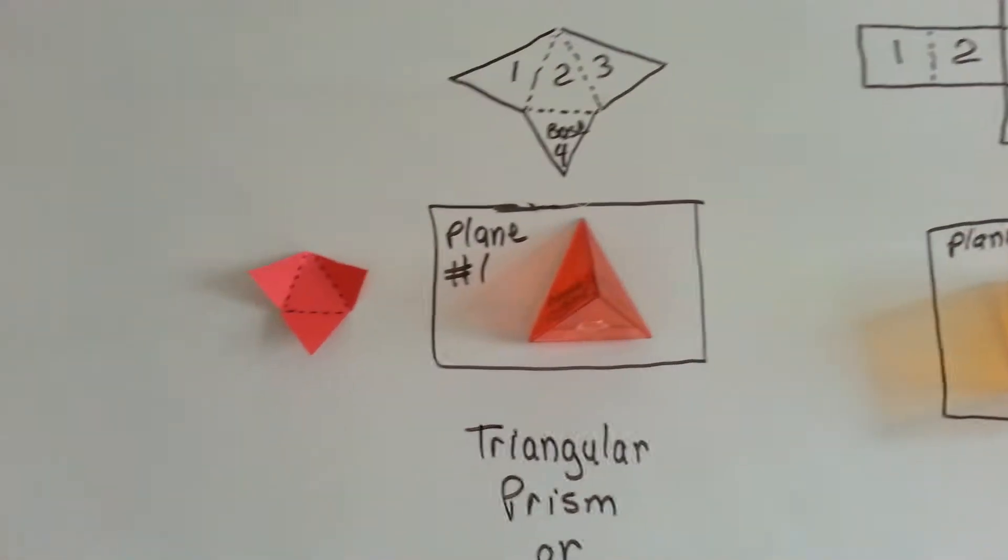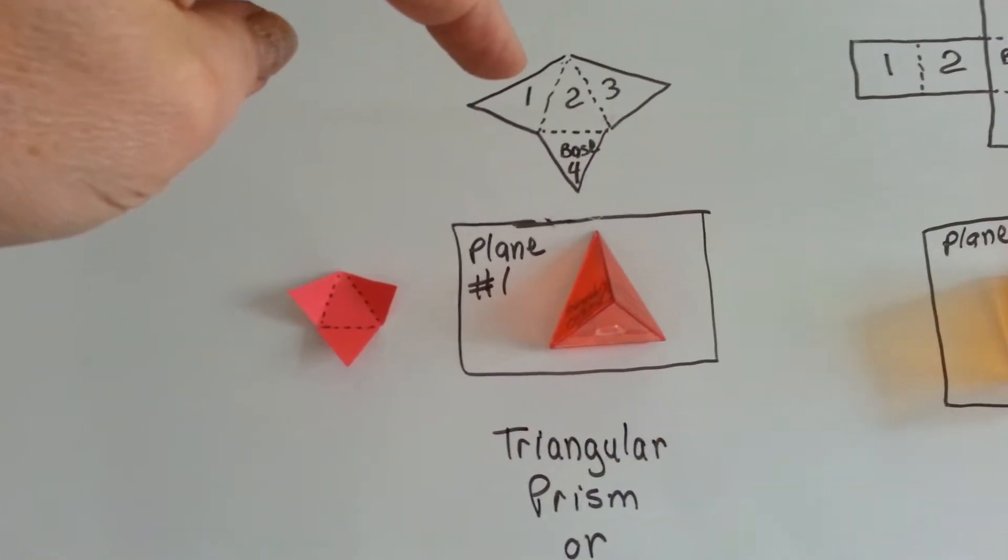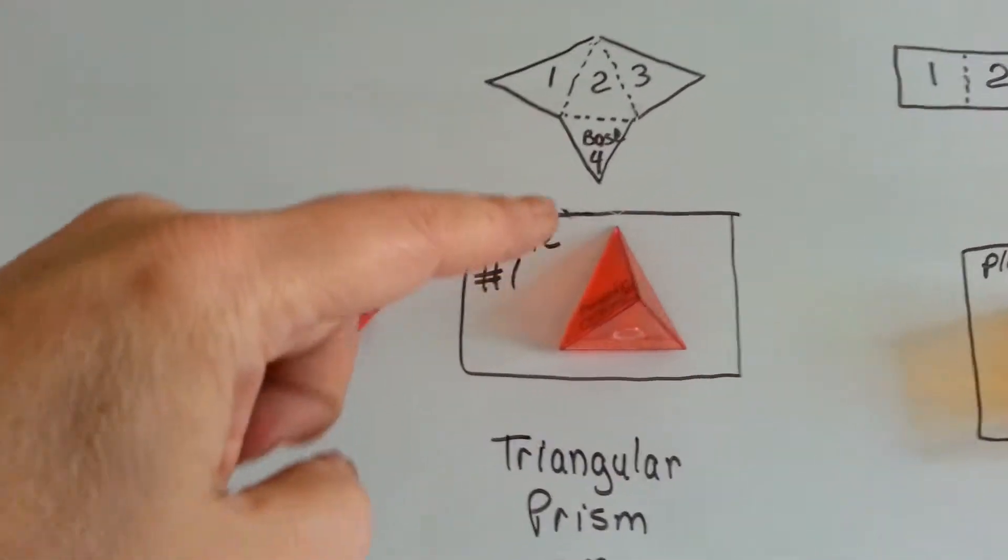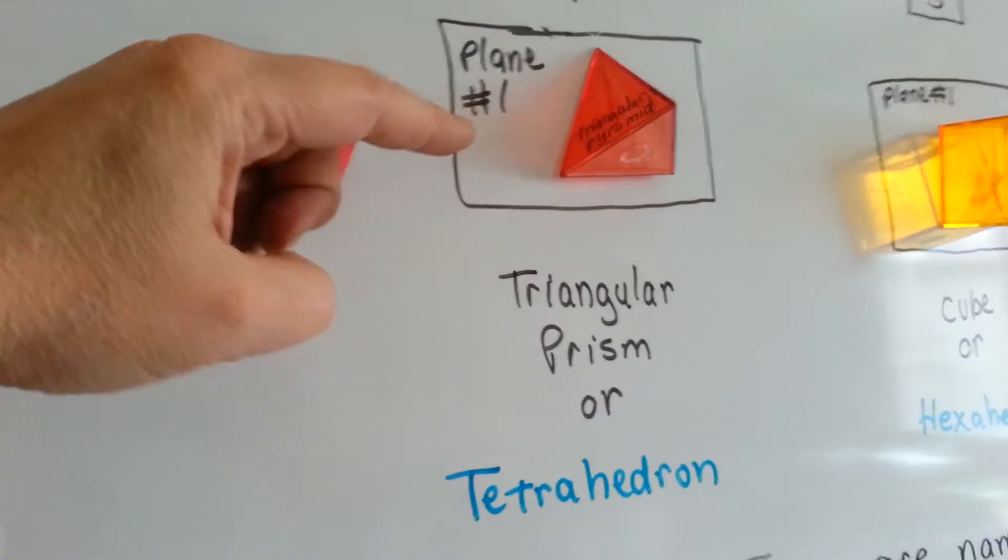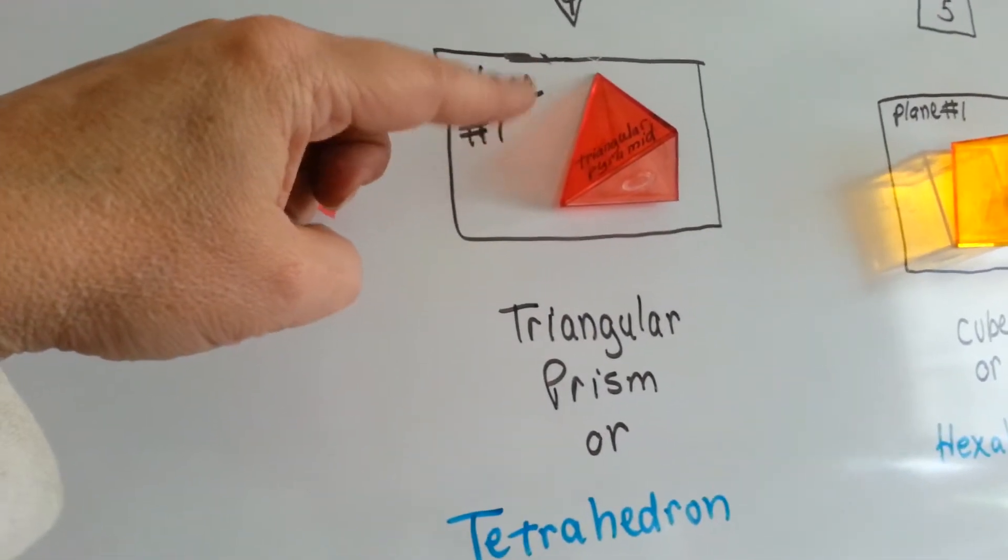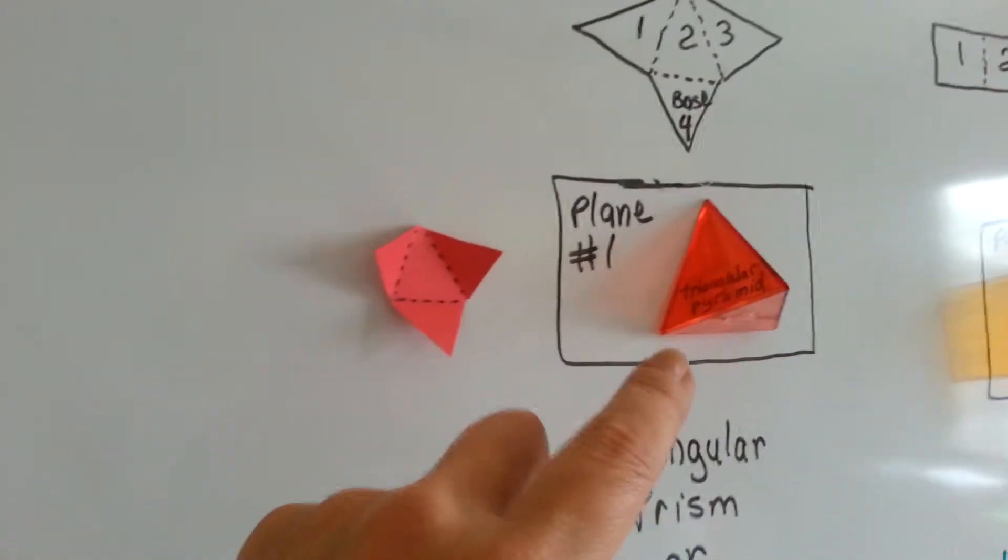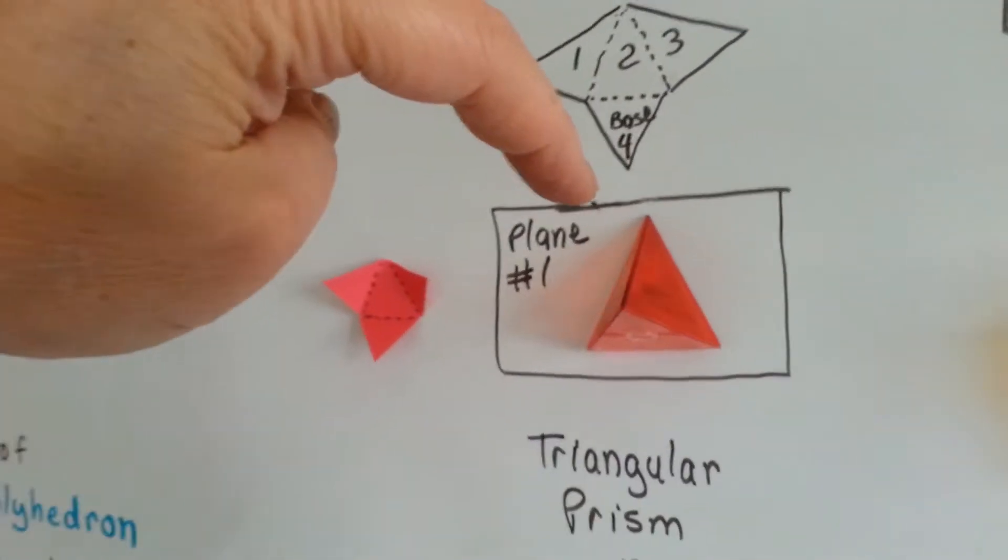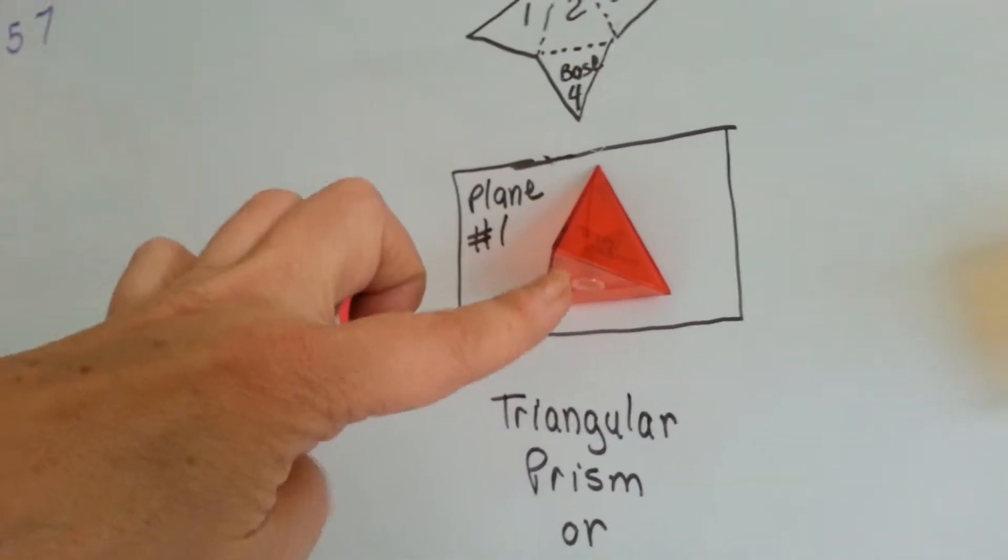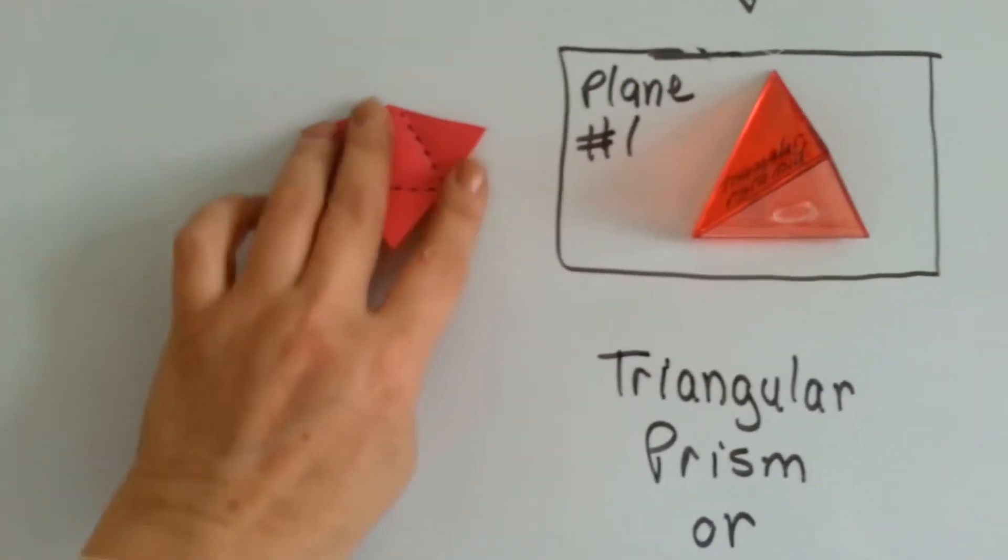It's going to look like this. So here is a triangular prism, which is a tetrahedron. Think of my dry erase board as the first plane. See how it's on the board? See how it is on there like that? So it's basically this.